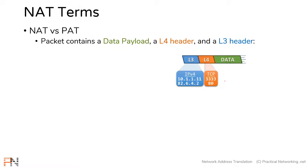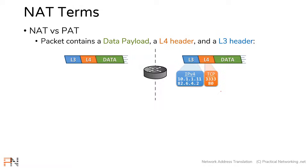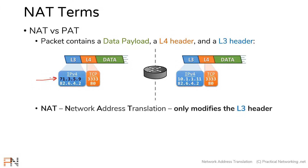The words NAT and PAT have to do with which parts of this packet are being translated. For example, if as this packet crosses a router, the only thing that changes is the layer 3 address, you have what's known as a NAT. NAT stands for network address translation. And if a packet is being translated and only the layer 3 header is modified, you have a NAT.